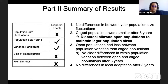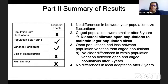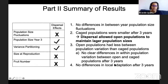To summarize this part: we did not find differences in population size fluctuations, but cage populations were smaller after three years — so dispersal allowed open populations to maintain larger population sizes. Open populations had less between-population variation than cage populations, but we didn't find clear differences in within-population variance. And there were no differences in local adaptation after three years: both size, reproduction, and fruit number declined over the three years in the field, and declined about equally for the open and the closed.